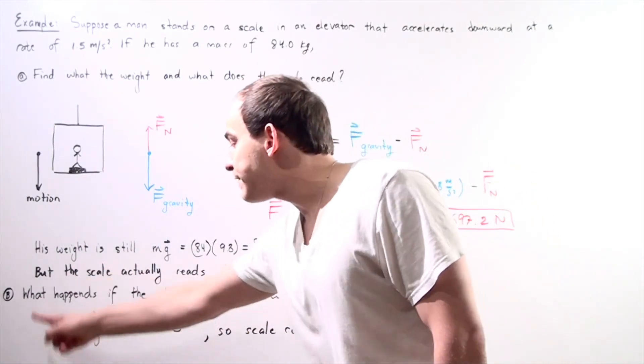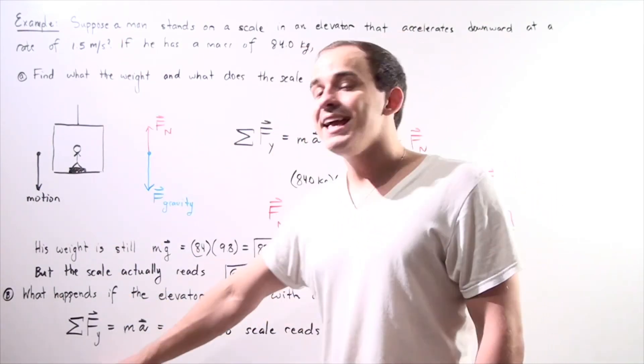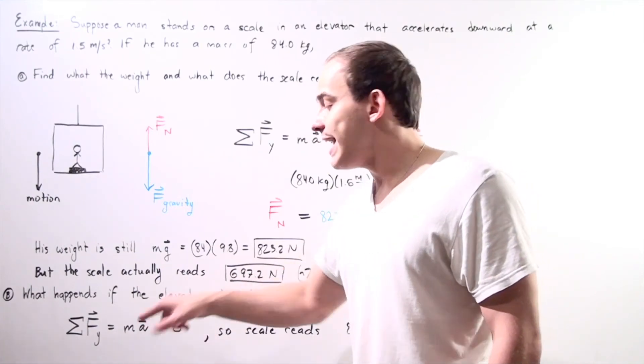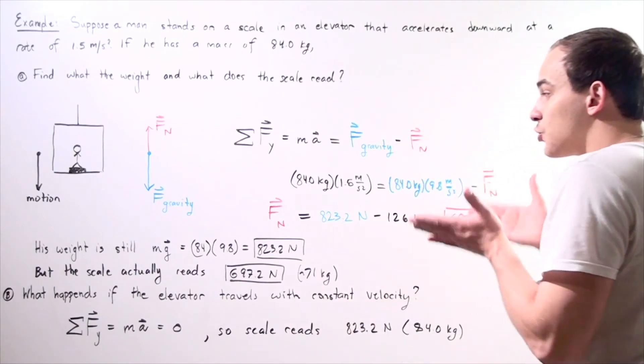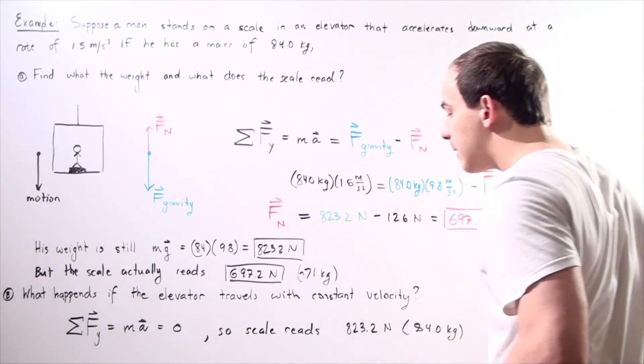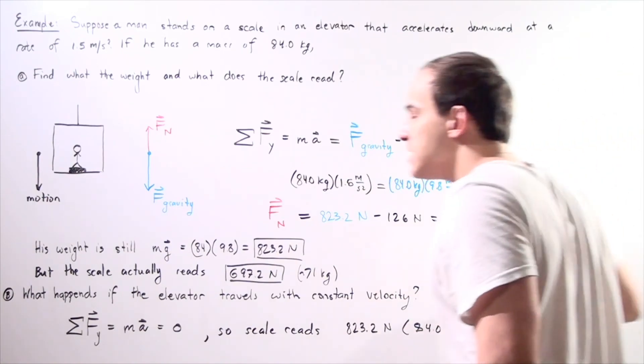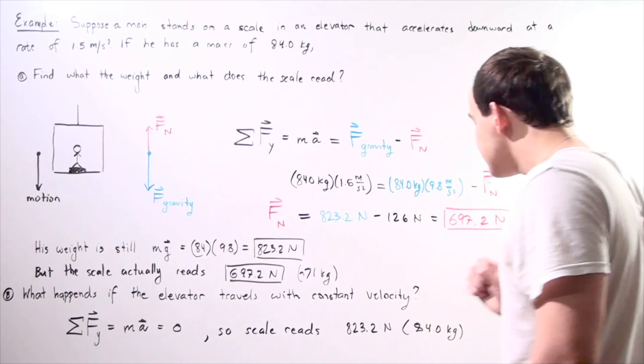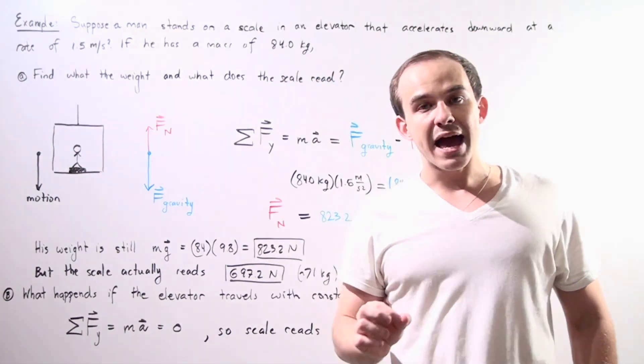That means the net forces, the sum of the forces along the y-axis, is zero. Mass times a equals zero because our a is zero. And so the scale actually reads our weight of the object, which is 823.2 newtons. In the case that our velocity of the elevator is constant, the scale reads 84 kilograms of mass.